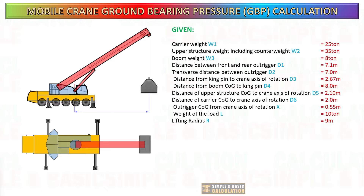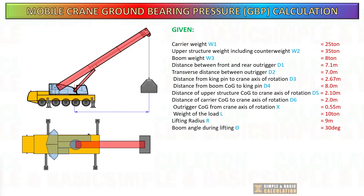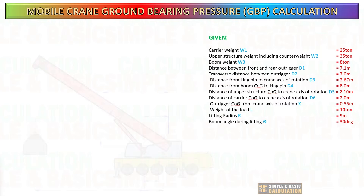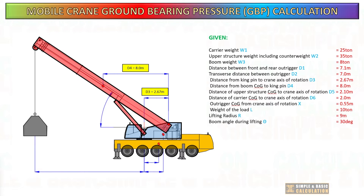Please note that the drawing is not to scale. The distance between front and rear outriggers is 7.1 meters; the transverse distance between outriggers is 7 meters; the boom angle during lifting is 30 degrees. The distance of the carrier's center of gravity to the crane axis of rotation is 2 meters, and for the upper structure it is 2.1 meters. The distance from the boom's center of gravity to the kingpin is 8 meters, and the kingpin distance to the crane axis of rotation is 2.67 meters.